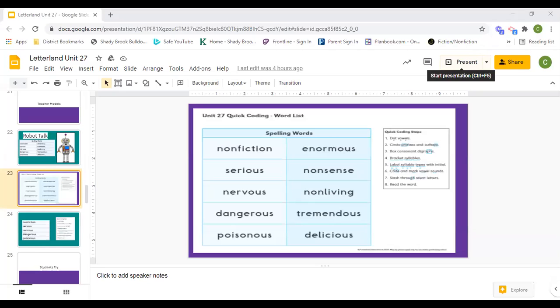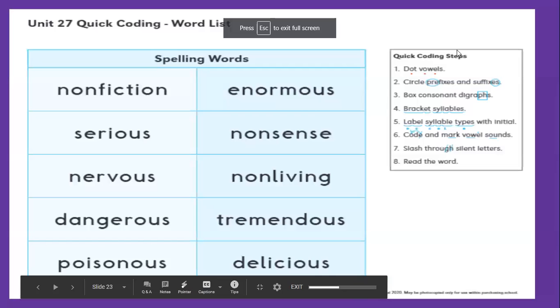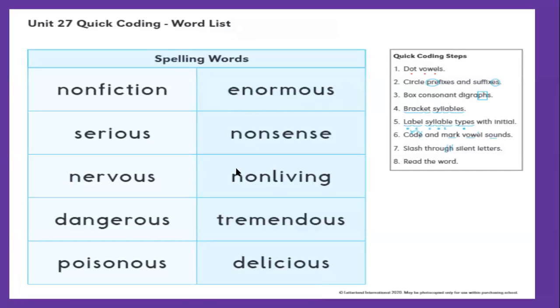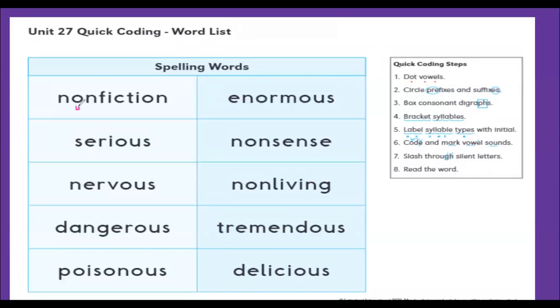Today is Letterland Unit 27 Quick Coding. Our first step is to look at and dot our vowels. We're going to dot our O, our I, and our I.